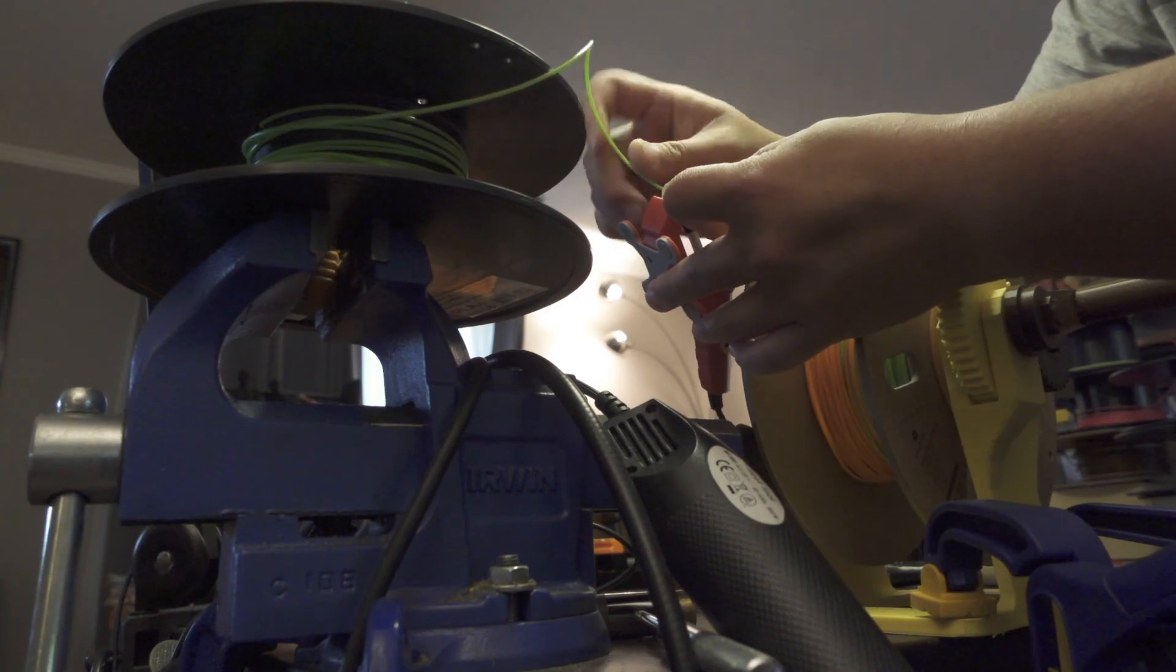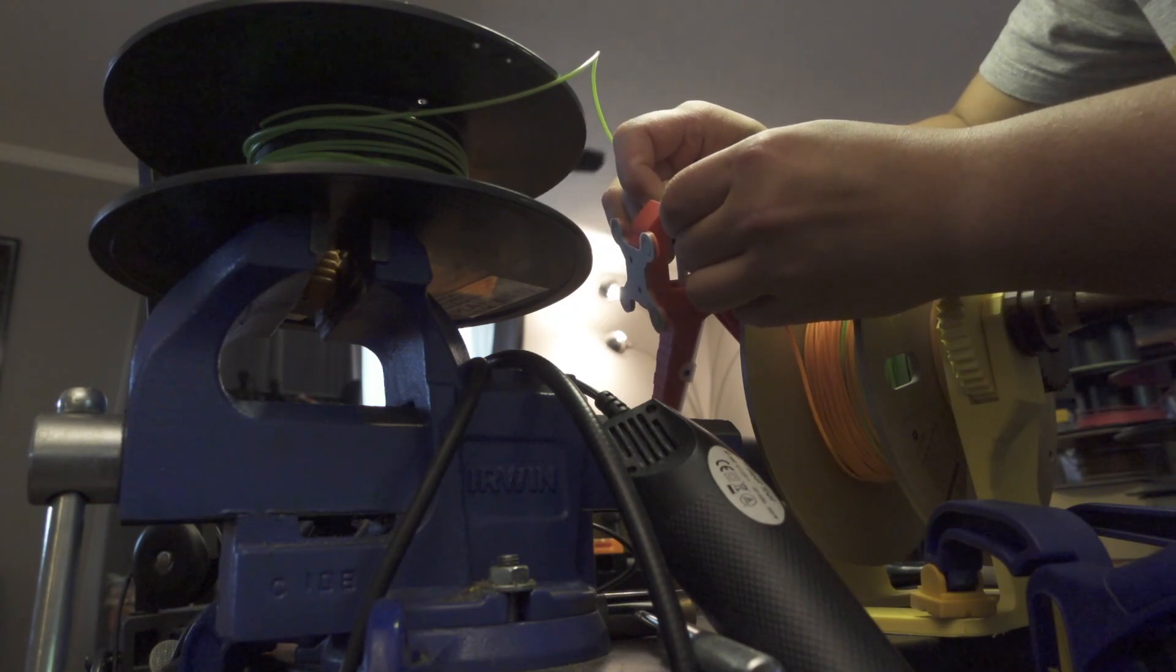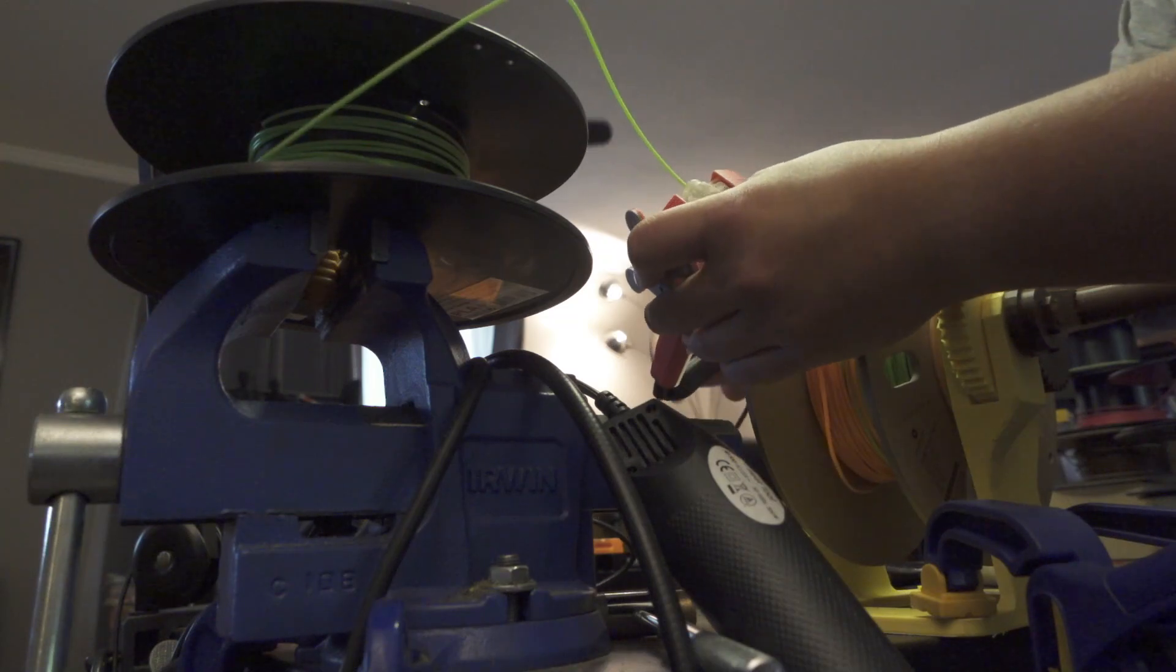To use the splicer, what you'd have to do first is to heat your splicing tool for about a minute by turning the switch on, and you let it heat up.